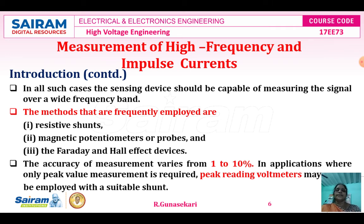In all such cases, the sensing device should be capable of measuring the signal over a wide frequency band. The methods that are frequently employed are: first, resistive shunt; second, magnetic potentiometers or probes; and third, Faraday and Hall effect devices. These three devices are used to measure the high frequency and impulse current.